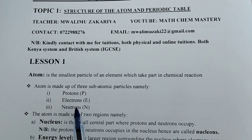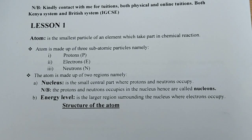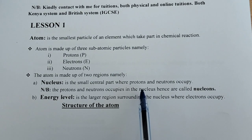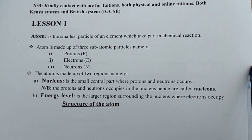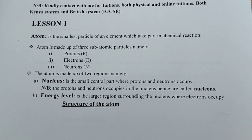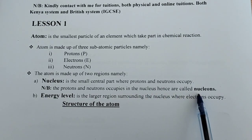The three subatomic particles are protons, electrons, and neutrons. The atom is also made up of two regions. The first region is the nucleus — the small central part where protons and neutrons occupy. Just as in biology where the animal cell has a central part called the nucleus, the atom similarly has a nucleus at its center, which is occupied by protons and neutrons.